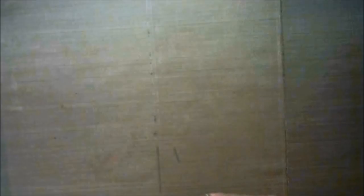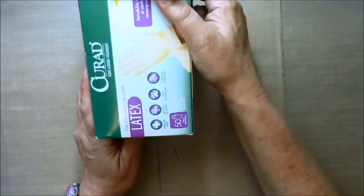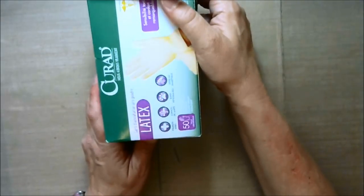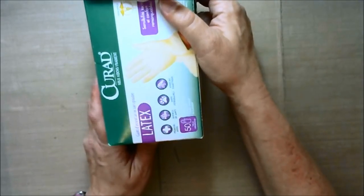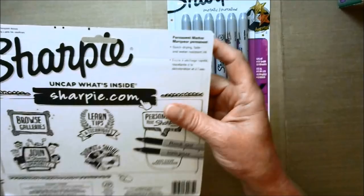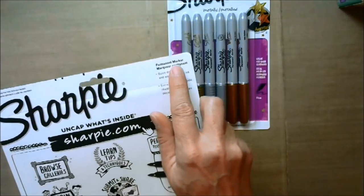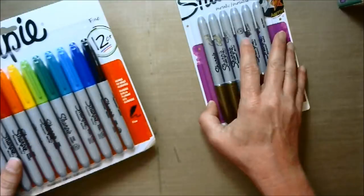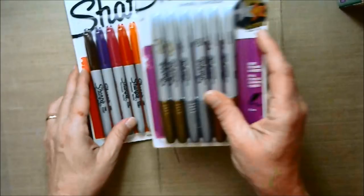First of all, paper towels. You're gonna need gloves or else your hands are going to be multicolored for days and weeks. Sharpie markers, permanent markers. That's what we're gonna use to get our color.